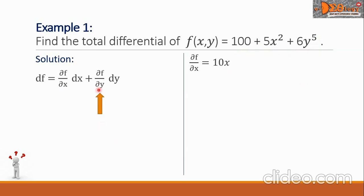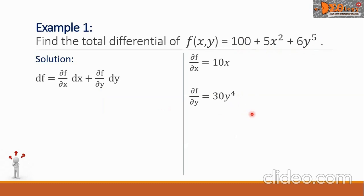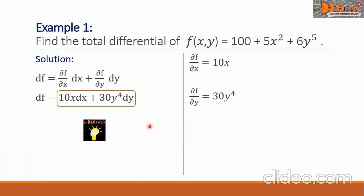Now let us simplify the partial derivative of f with respect to y. The value will be 30y raised to 4. Derivative of 100 is 0 (constant), derivative of 5x squared is 0 because x is taken as a constant, and derivative of 6y raised to 5 gives 30y raised to 4. Substituting, the total differential df equals 10x dx plus 30y raised to 4 dy. This is the final answer.